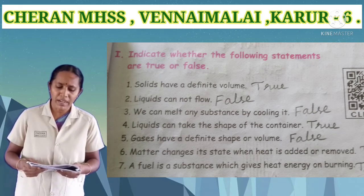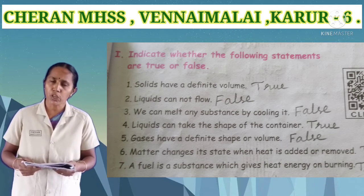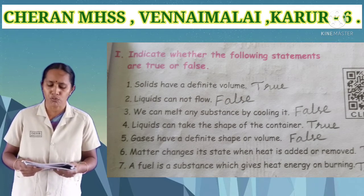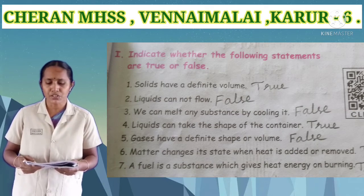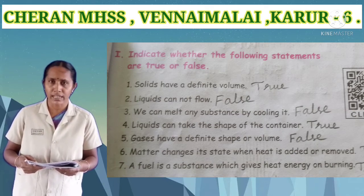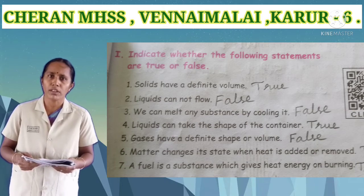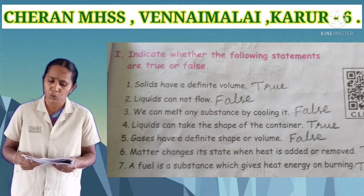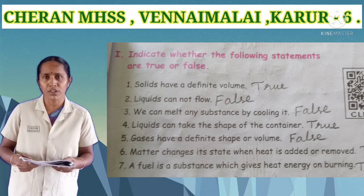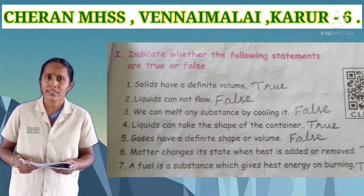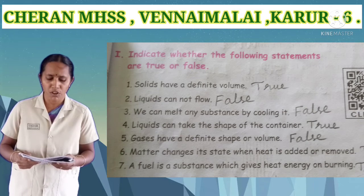Sixth one: we can melt any substance by cooling it. Answer: false. Seventh one: liquids take the shape of the container. Answer: true. Eighth one: gas has a definite shape or volume. Gases do not have a definite shape or volume, so write false.